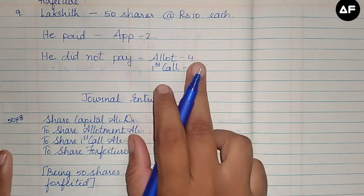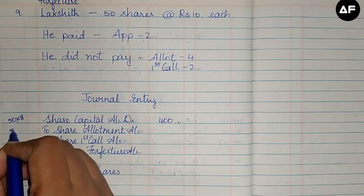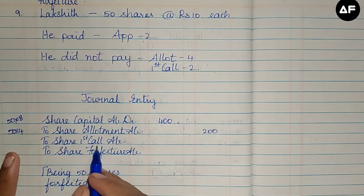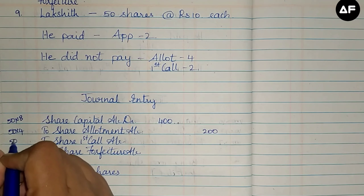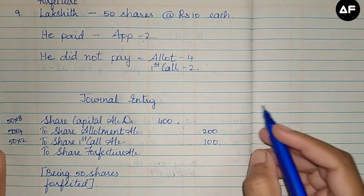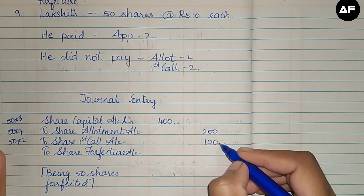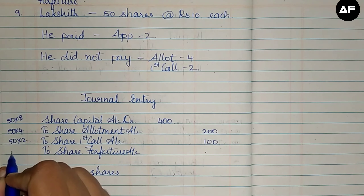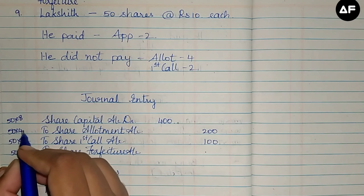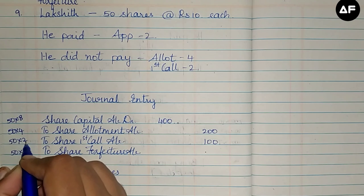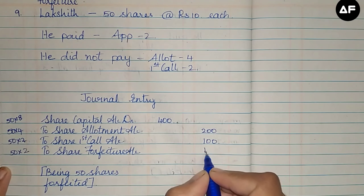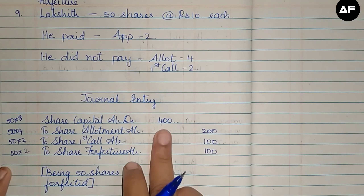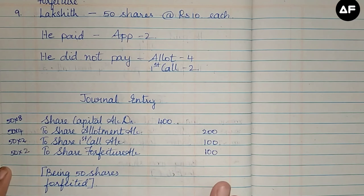Share Allotment unpaid = 50 × ₹4 = ₹200. Share First Call unpaid = 50 × ₹2 = ₹100. Shares Forfeited (amount paid: ₹2) = 50 × ₹2 = ₹100. Total credits: ₹200 + ₹100 + ₹100 = ₹400, which equals the debit of ₹400. Debit equals credit, confirming the journal entry is balanced.